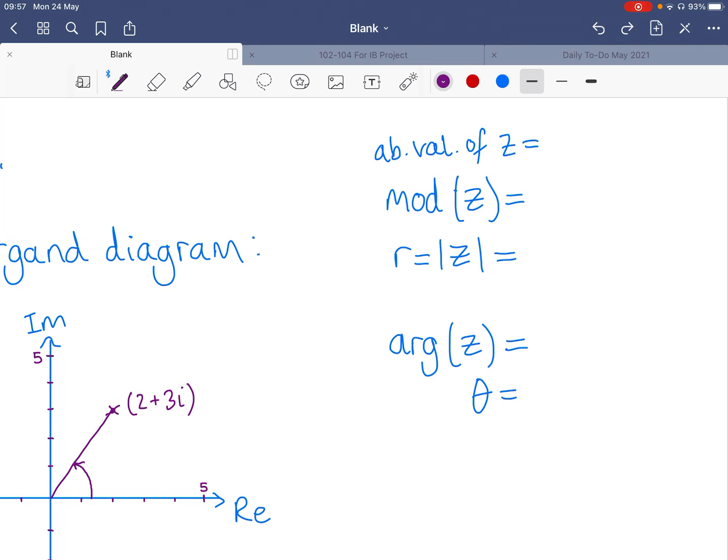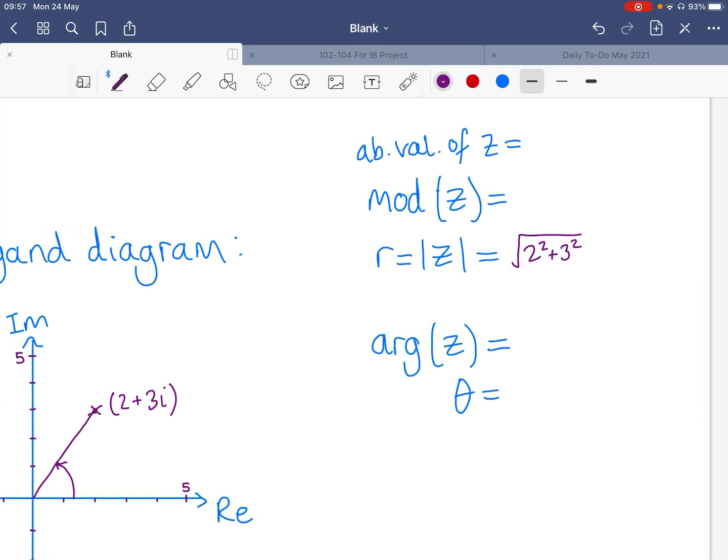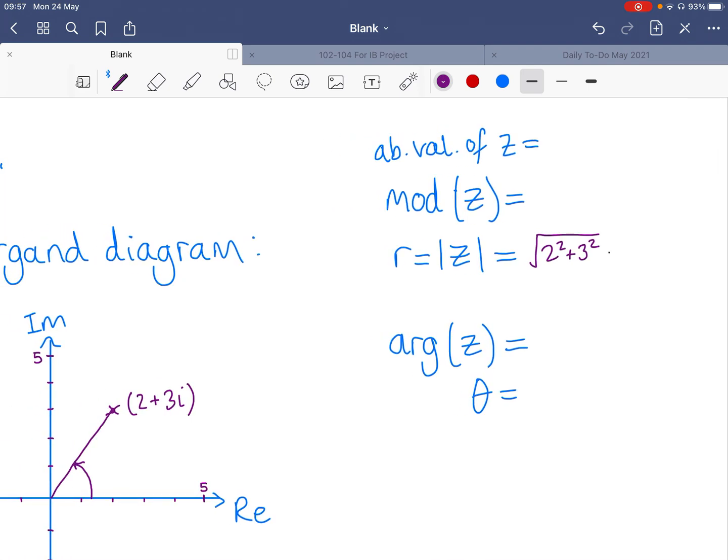And as you can imagine, this is the length of the diagonal line and this is simply Pythagorean theorem. So, square root of the real part squared plus the imaginary part squared. So, 2 squared plus 3 squared and this is just root 13. So that's the length of this line.